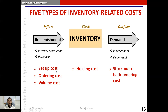On the replenishment side, there are associated costs. Setup cost, also called changeover cost, is the cost incurred when we produce internally and need to change between one product and another in the same facility. Ordering cost is incurred when we are not producing inside but ordering from an external supplier.